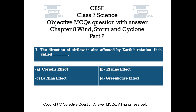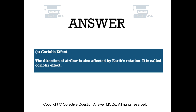Question number 7. The direction of airflow is also affected by Earth's rotation. It is called — Option A: Coriolis effect. The right answer is Option A. The direction of airflow is also affected by Earth's rotation; it is called the Coriolis effect.